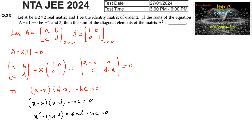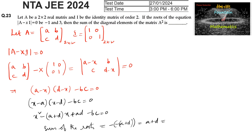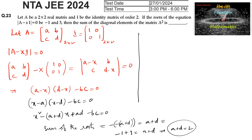The sum of the roots equals −(−(a+d)) = a+d. Since the given roots are −1 and 3, we have −1 + 3 = a + d, so a + d = 2.